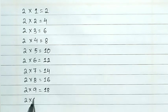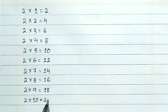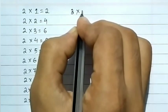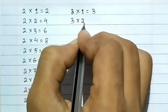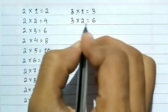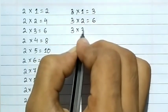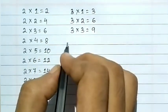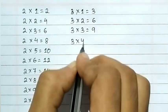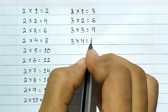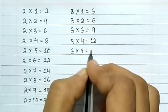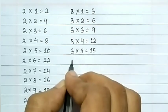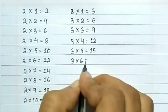2 10s are 20. Now we learn table of 3. 3 1s are 3, 3 2s are 6, 3 3s are 9, 3 4s are 12, 3 5s are 15, 3 6s are 18.